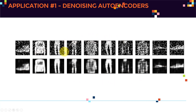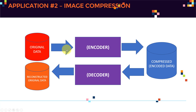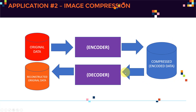That's the first application. The second application is image compression. We feed in our original data to the encoder to obtain a compressed encoded version. We can then pass it back to the decoder to reconstruct the original data — that's one of the major applications of autoencoders.